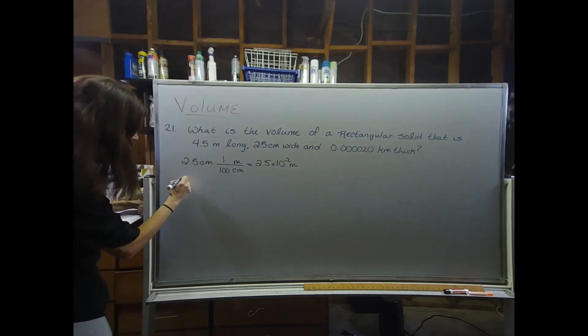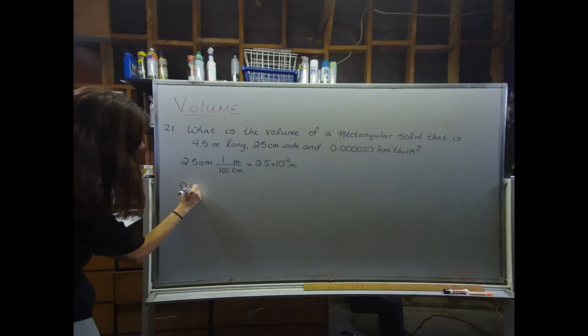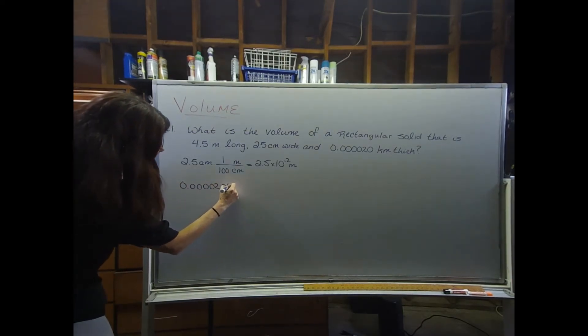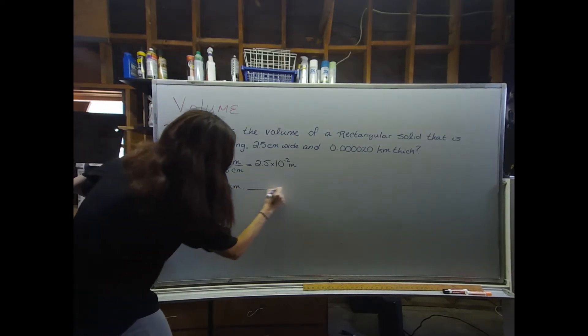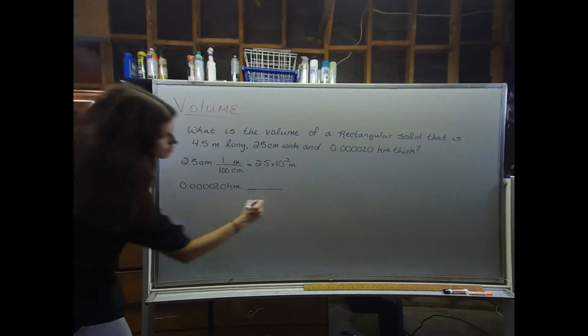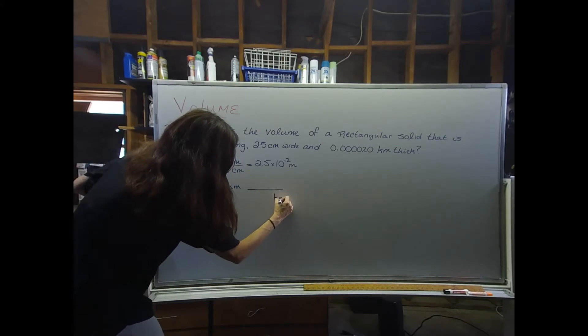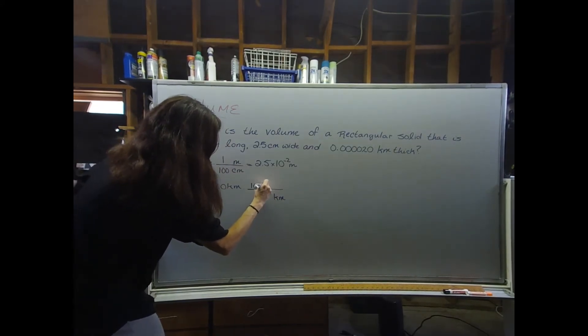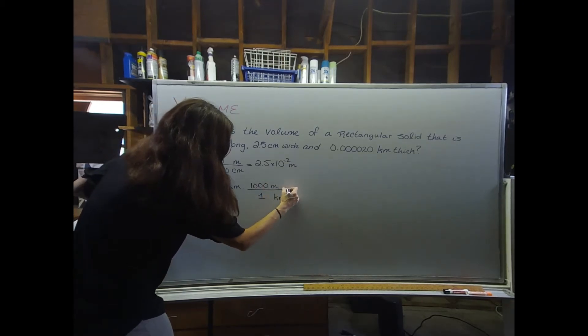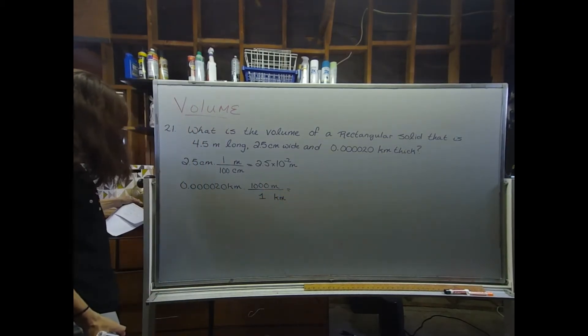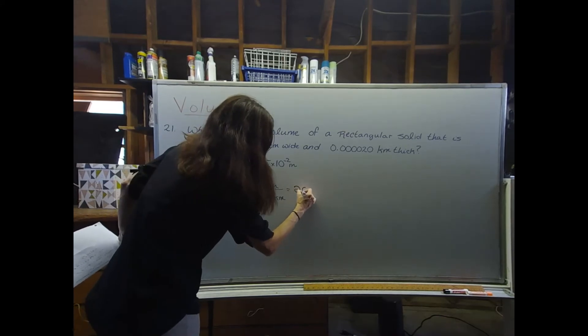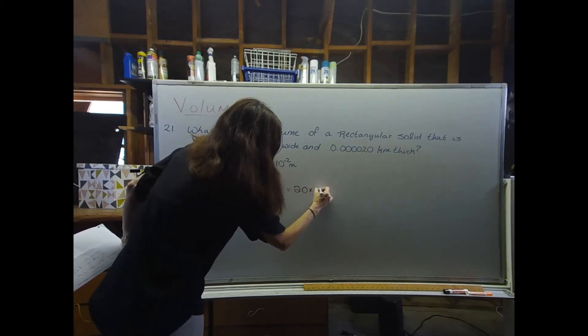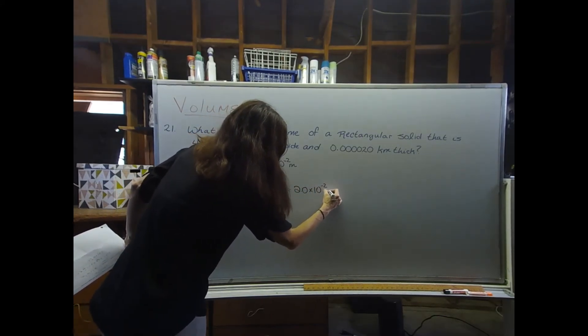I'm also going to do the same thing with that kilometer value. I'm going to convert it over to meters. So I want to get rid of kilometers. One kilometer has 1,000 meters. So that winds up being 2.0 times 10 to the negative 2 meters.